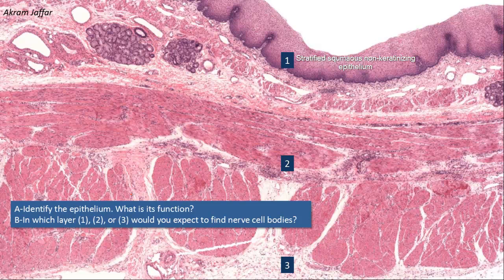This is a section of the gut tube showing four distinct functional layers: mucosa, submucosa, muscularis externa (also called muscularis propria), and the adventitia. In the gut tube, stratified squamous epithelium is found in the oral cavity, pharynx, esophagus, and anal canal, and it serves as a protective epithelium.